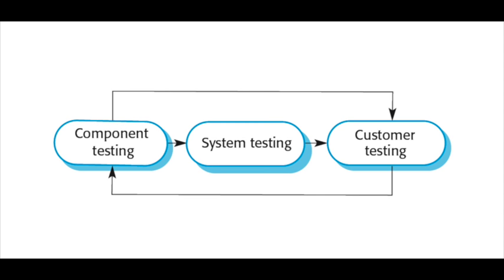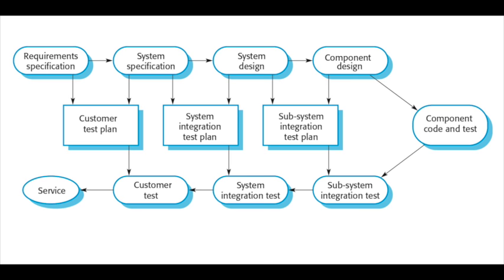And then there's acceptance testing, where a customer or a surrogate for a customer is involved, and the customer decides if the software actually is what they want. In a plan-driven process, we sometimes see the V model of testing. I've actually turned it on its side to make it fit on a slide, but if you imagine it in a vertical alignment you can see the V, where each of the stages in the development process has a corresponding testing activity.